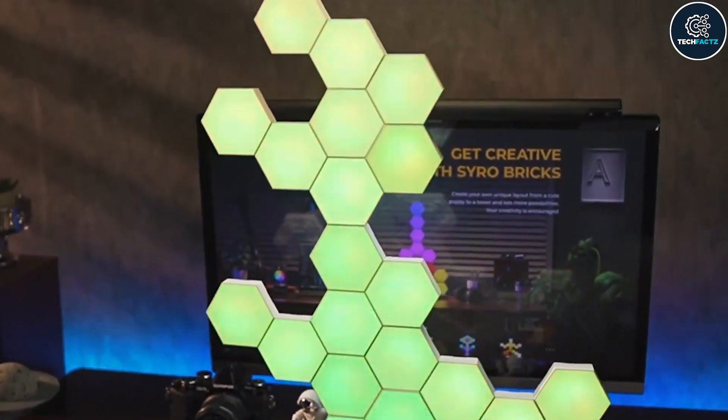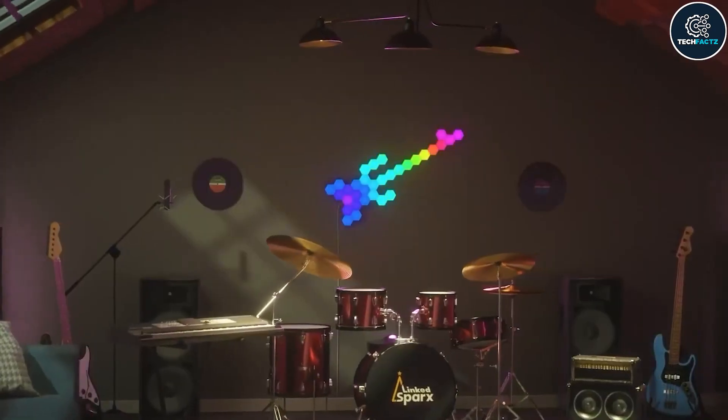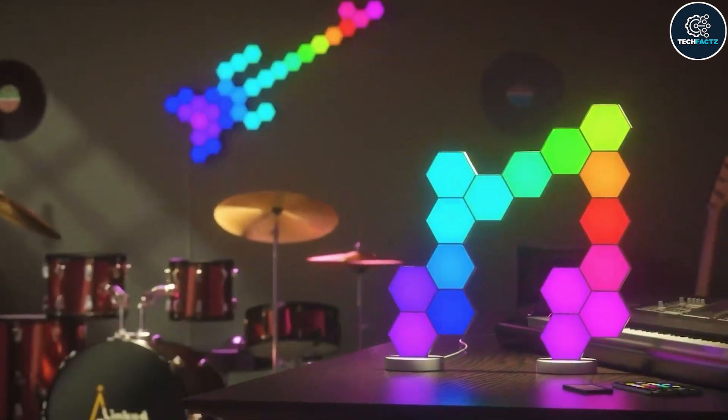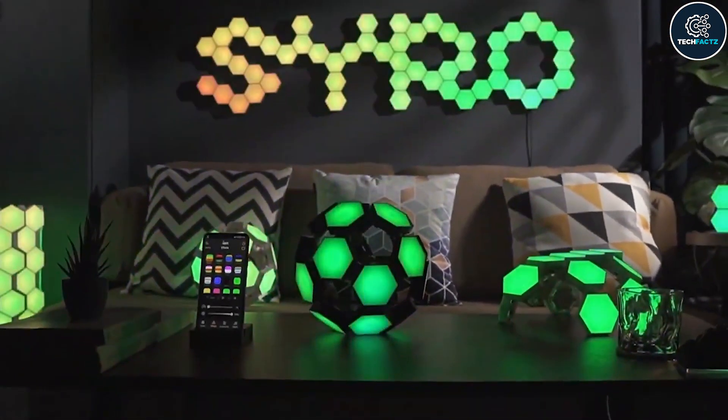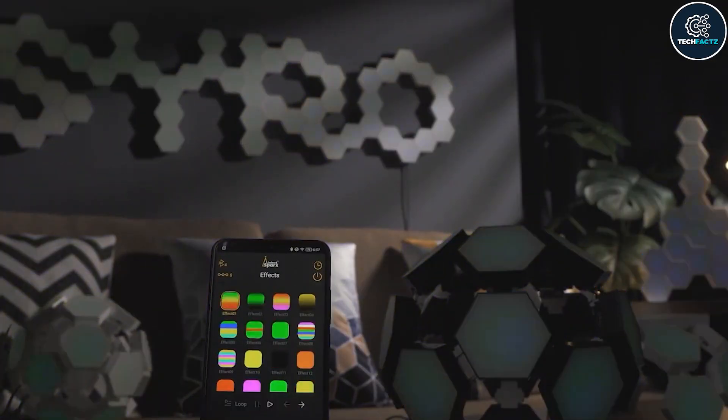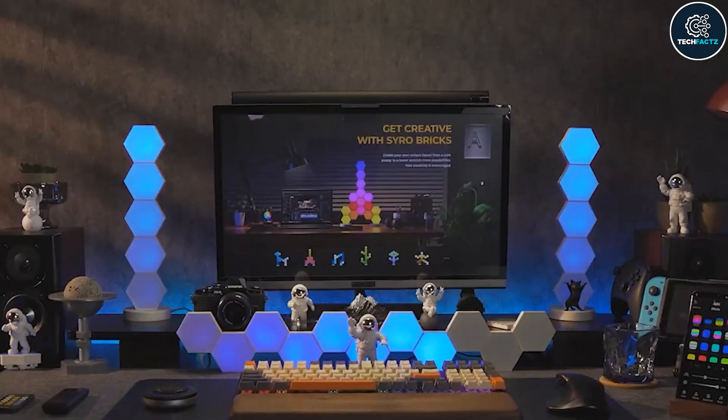Once you have assembled all the parts, you can pair the device with the app on your phone to have full control over the color settings, preset color scenes, brightness level, and other features. You can also use the included remote for these purposes or simply choose the music mode in which the colors respond to the beats of your favorite songs.